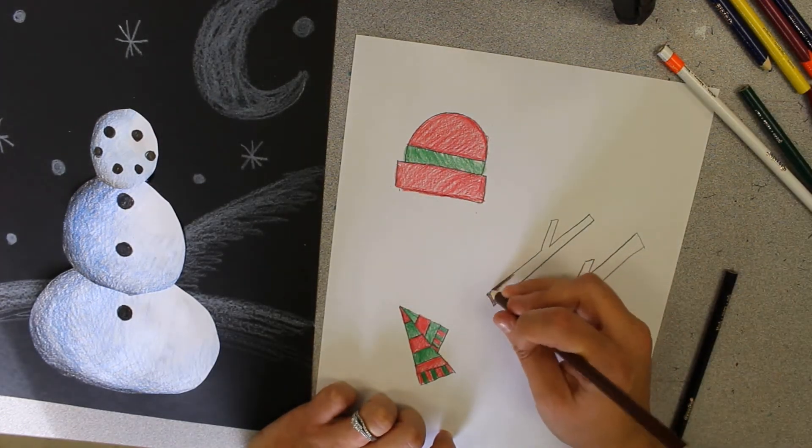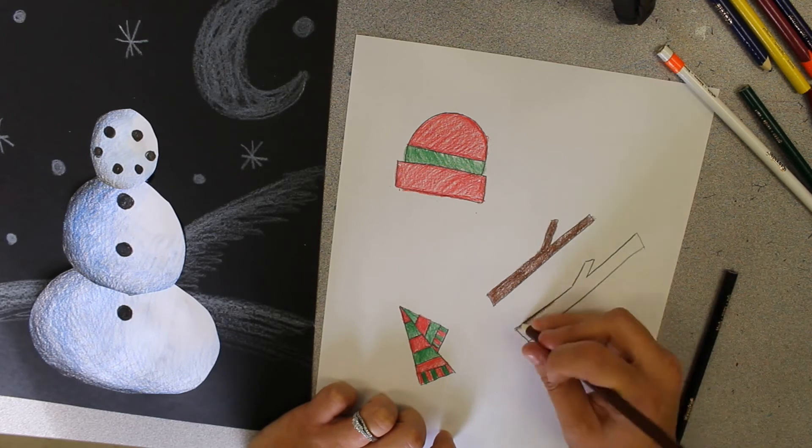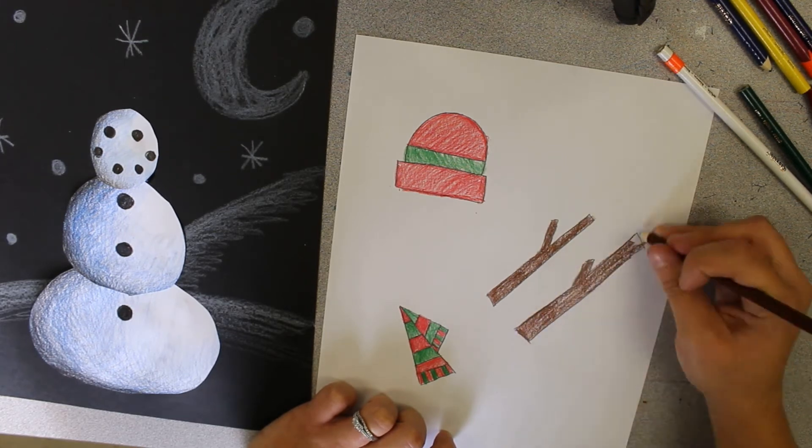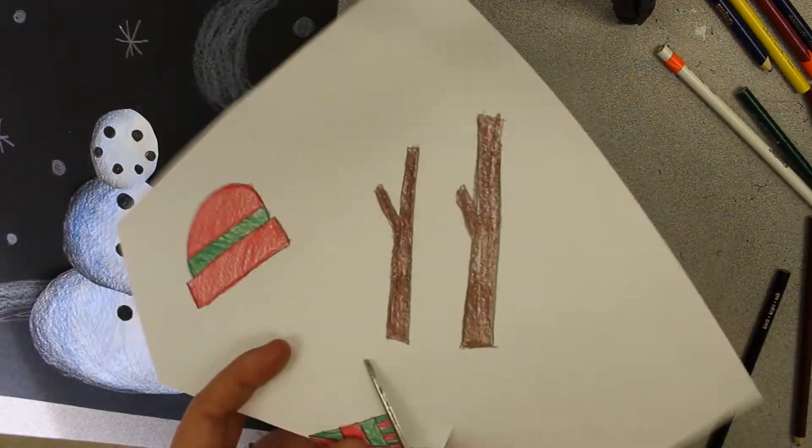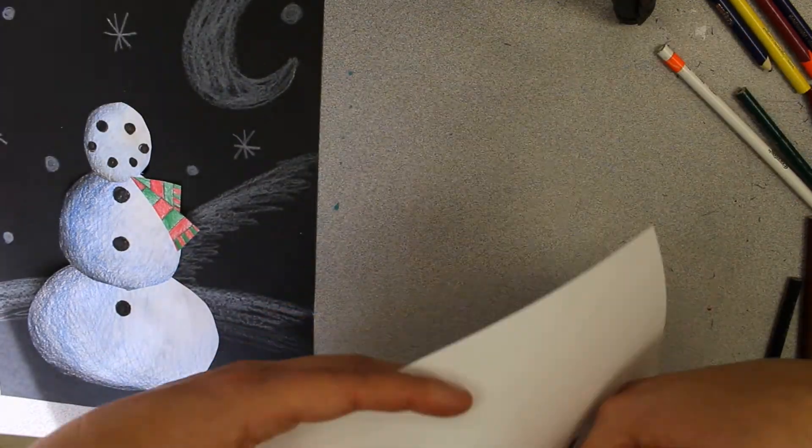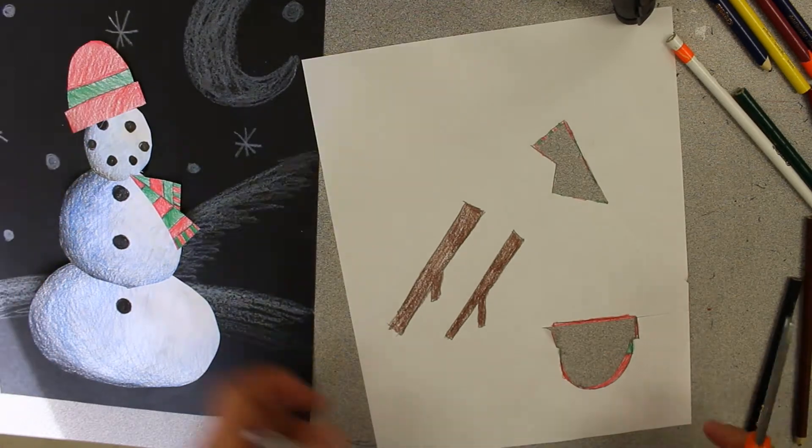Remember to really take your time coloring in nice and neat. Once you're all finished coloring everything in, then you can cut all of your snowman accessories out and glue them wherever they belong onto your snowman.